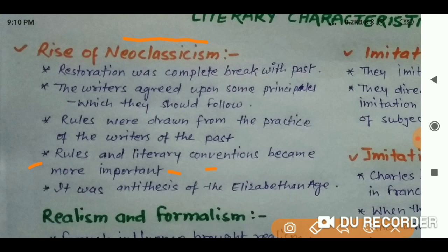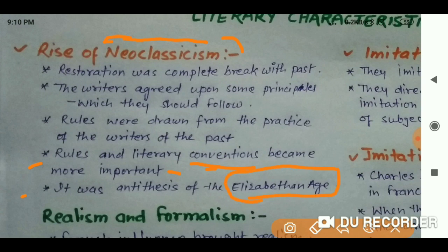In Neoclassicism, the focus is on rules and literary conventions rather than imagination. It was the antithesis — the opposite — of the Elizabethan Age. In the Elizabethan Age you will see imagination as the main part of works; for example, the works of Shakespeare, where imagination plays an important role.